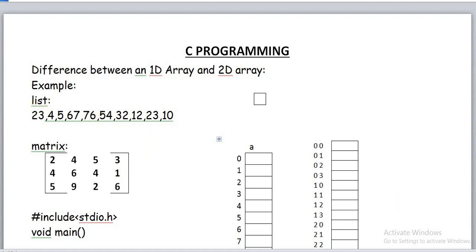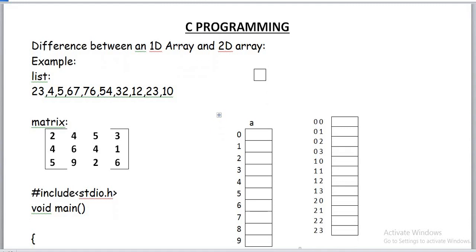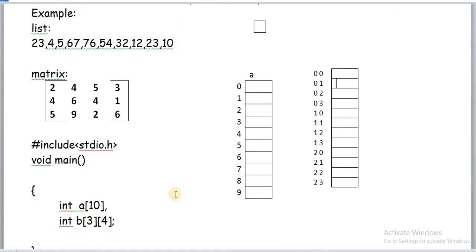For list type data we can create a one-dimensional array like int a[10]. Here, 10 locations will be created and are referred to by the single name 'a'. For matrix data, we represent it using a two-dimensional array with a data type, array name, row size, and column size.